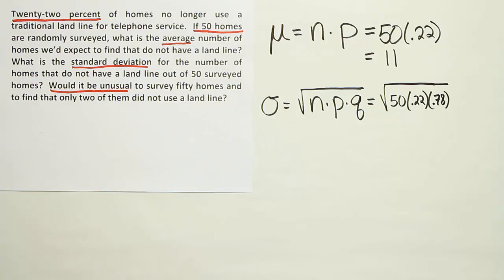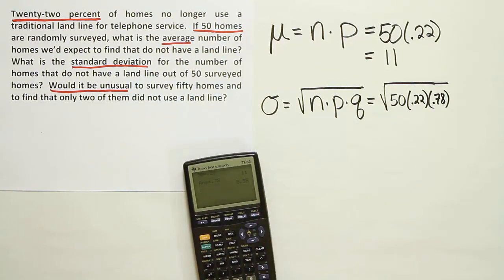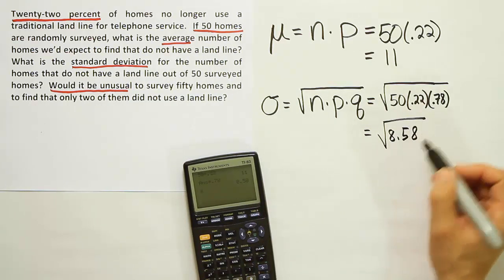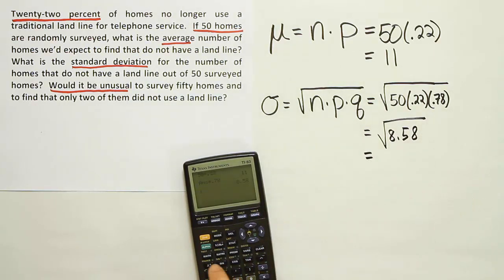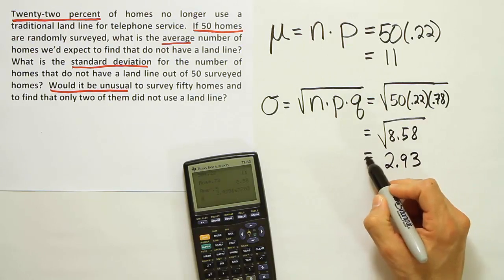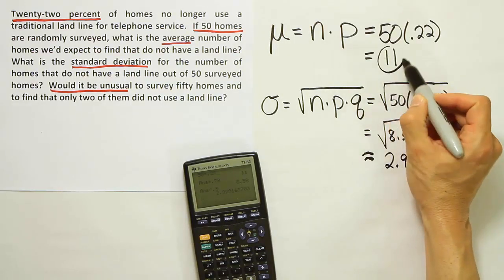Since we have to do a square root, let's whip out our calculator for that. We'll do 50 times 0.22 times 0.78. I've entered all that into my calculator. I get the answer 8.58. And then I finally have to take the square root. I'll raise that to the half power, which is the same as taking the square root, and I'll end up with 2.93 approximately. So we've done some rounding there, approximately 2.93. Now we have our two numbers, our mean and our standard deviation.